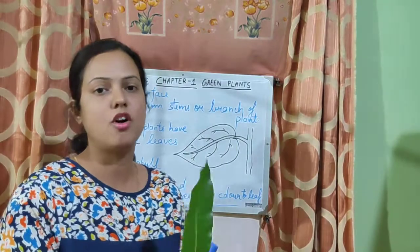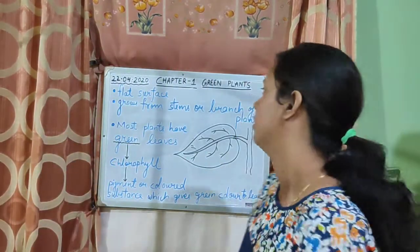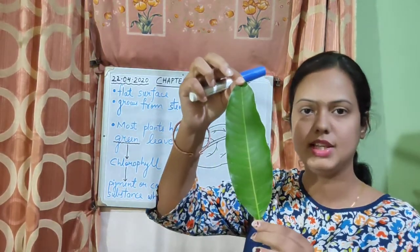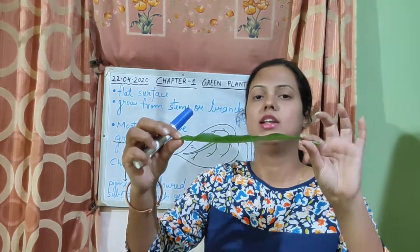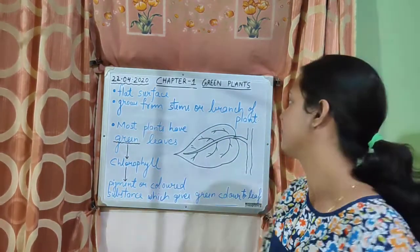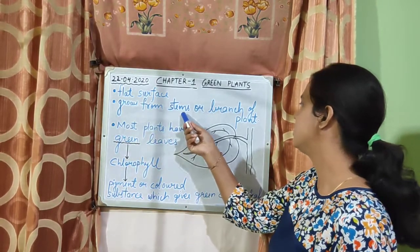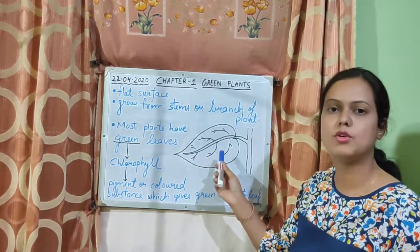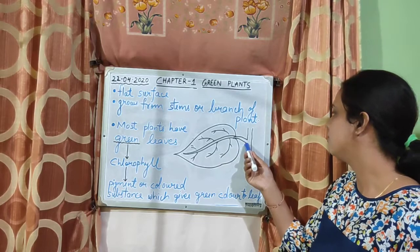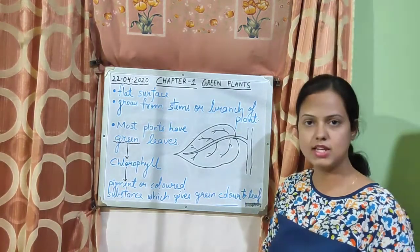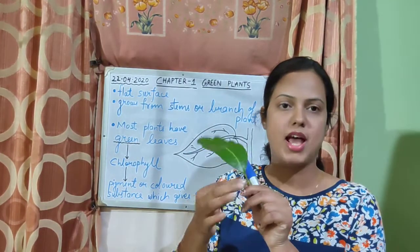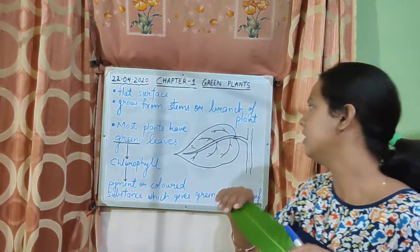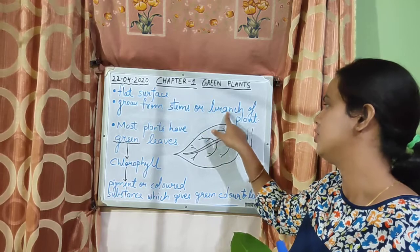Now let's see the structure of this leaf. First of all, the leaf always has a flat surface. Second, the leaf grows from the stem or branch of the plant. So the leaf always has a flat surface and it grows from the branch of the plant.